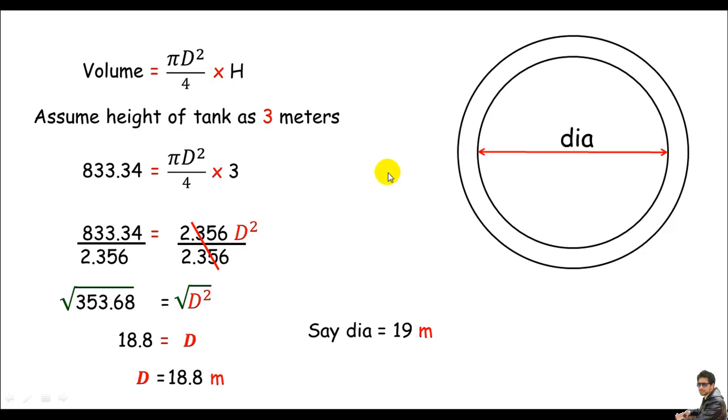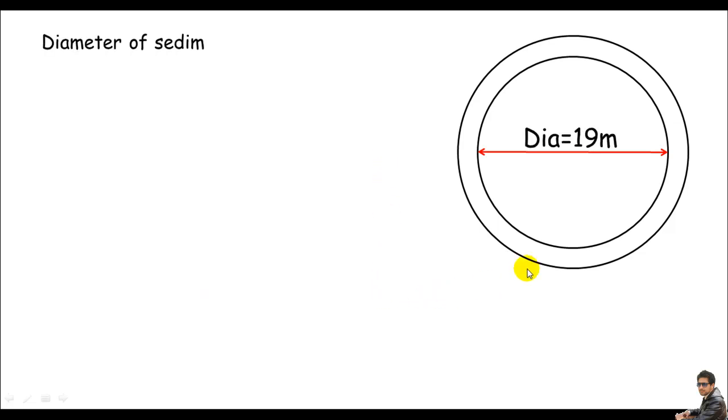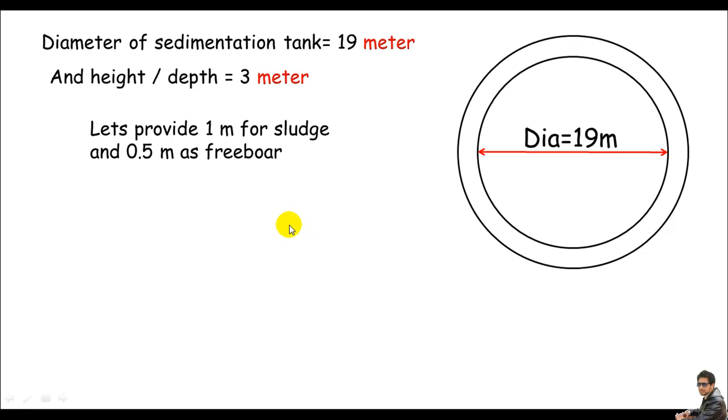So we got a nice value for diameter of the tank, which is 19 meter. Remember the depth or the height of the given tank is 3 meter. And this was our assumption. Let me just provide 1 meter for sludge and 0.5 meter is pretty good, so the total depth must be 3 meter plus 1 meter plus 0.5 meter. This is of course 4.5 meter.